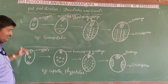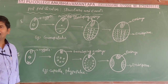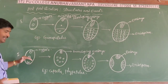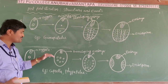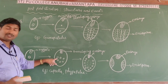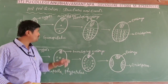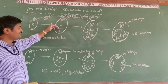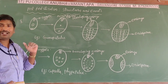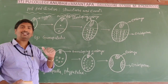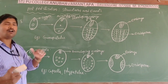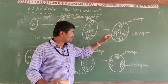The difference between free nuclear and cellular endosperm: in free nuclear endosperm, the primary endosperm nucleus undergoes free nuclear division not immediately followed by cytokinesis; whereas in cellular endosperm, every nuclear division (karyokinesis) is immediately followed by cytokinesis, so cells are formed from the very beginning.